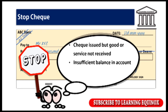The third situation could be if you have already made payment via some other mode like NEFT, IMPS, a credit card payment, or any other mode. In such a case, if you had earlier issued a check, you may want to stop the payment for that check to avoid duplication. So in such a case, you may want to use the stop check feature.